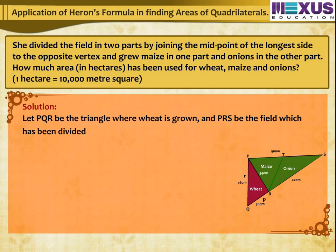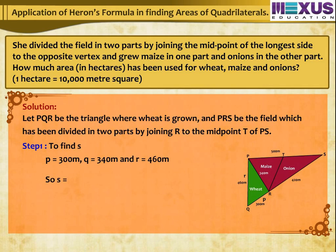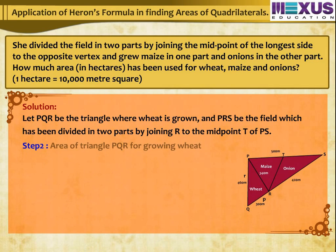Step 1: To find S for triangle PQR — P = 300m, Q = 340m, R = 460m. So S = (300 + 340 + 460) ÷ 2 = 550m. Step 2: Area of triangle PQR for growing wheat.